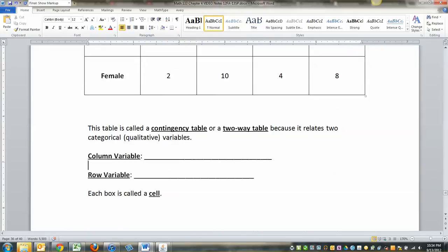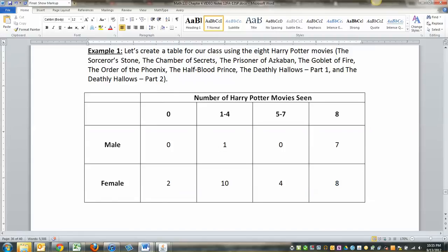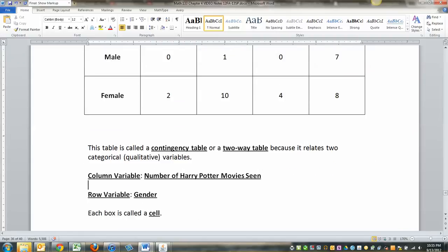Speaking of which, what is the column variable? The column variable is the number of Harry Potter movies seen. And then the row variable would be gender, right? And gender, remember from chapter one, is a qualitative thing, not a quantitative thing. That's why this particular data set works better as a contingency table, not as regression. It's not going to work.